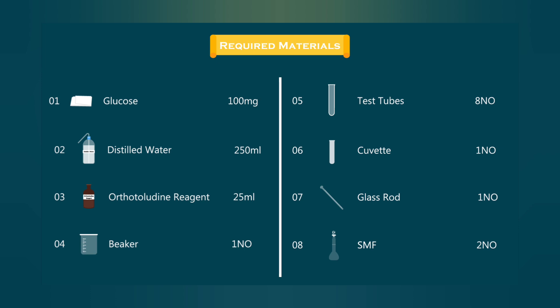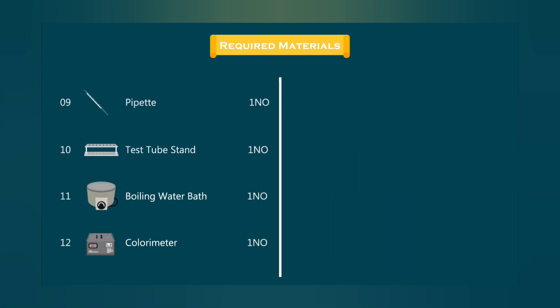Required materials are glucose, distilled water, orthotolidin reagent, beaker, test tube, glass rod, pipette, test tube stand, boiling water bath, and a colorimeter or spectrophotometer.